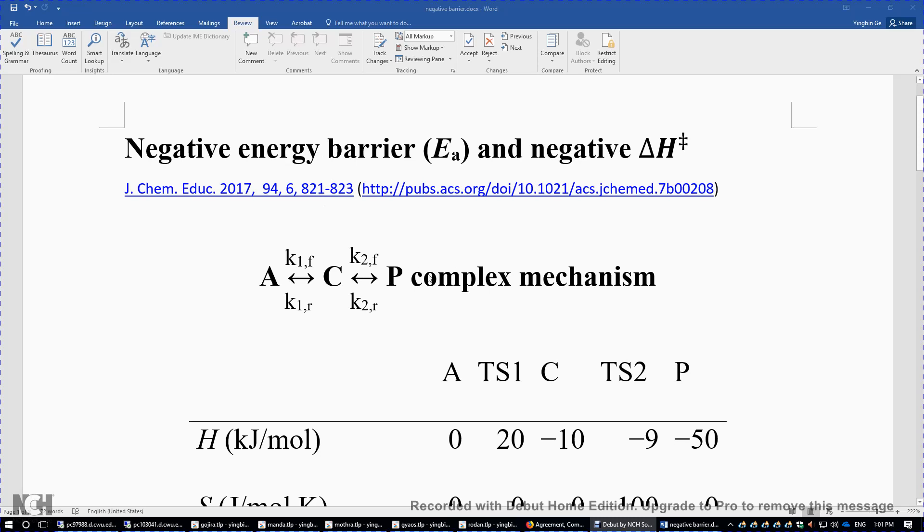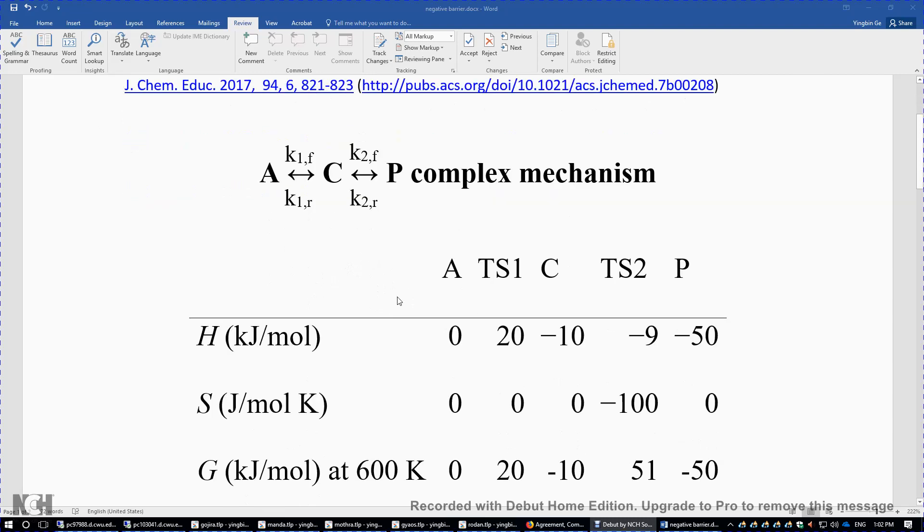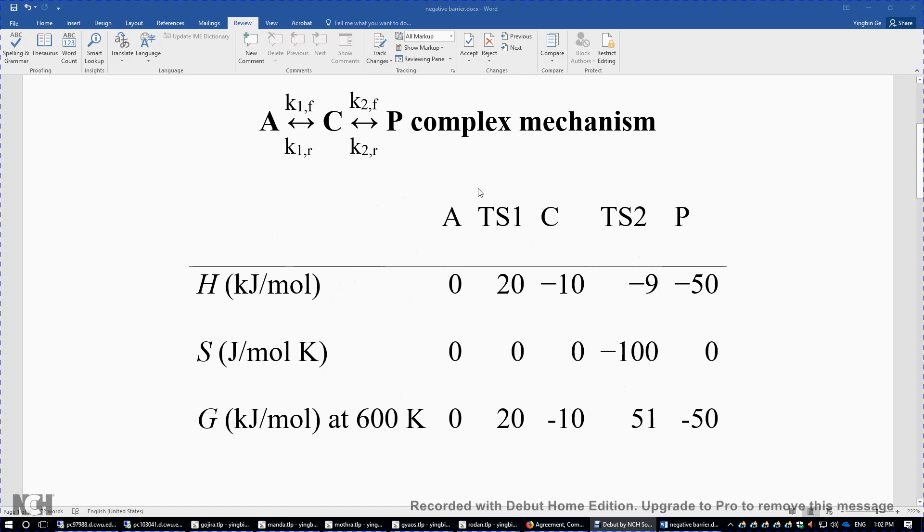If we look at a complex mechanism from A to C and C to P, it consists of four elementary steps: A to C, C to A, C to P, and P to C. Therefore, you have K1 forward, K1 reverse, K2 forward, and K2 reverse. I gave a numerical example in the paper. Let's say we have A, C, and P, and then two transition states, one between A and C, and another between C and P. The relative enthalpy of A, TS1, C, TS2, P are 0, 20, -10, -9, -50 kilojoules per mole. I'm using A as the zero reference, so all other numbers are relative quantities.